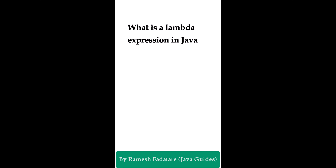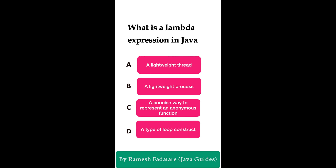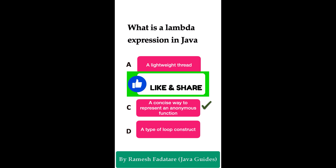What is a lambda expression in Java? Option A: a lightweight thread. Option B: a lightweight process. Option C: a concise way to represent an anonymous function. Option D: a type of loop construct. The correct answer is option C. Lambda expressions were introduced in Java 8 for functional programming. A lambda expression does not have a name, which is why it is called an anonymous function. We use lambda expressions to write concise and clear code and to implement functional interfaces in Java.